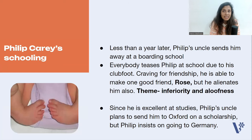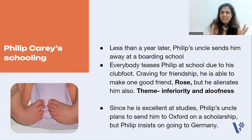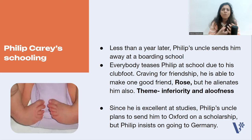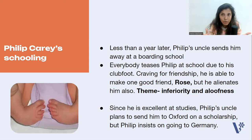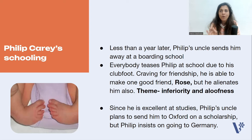Less than a year after his adoption, Philip's uncle sends him to a boarding school. Because of his club foot, everybody teases him at school. Nobody talks to him. He wants to make friends and have connection, but he can't. Even when someone is kind to him, he feels he doesn't deserve it. At school, Philip makes a good friend called Rose, but their friendship does not continue long because Philip himself alienates from the friendship. The theme here is inferiority and aloofness.